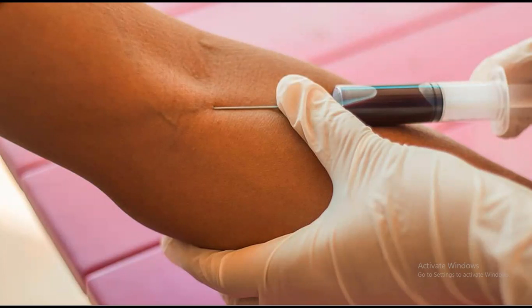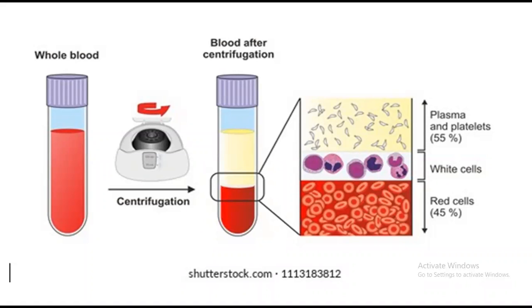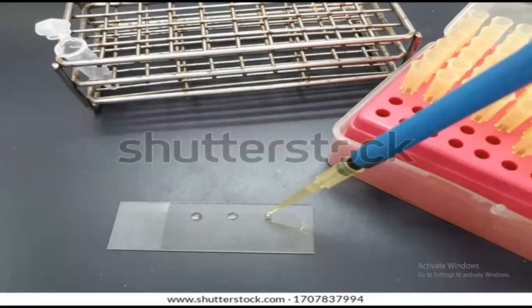For the slide test, you have to take blood from a volunteer — you can take it from yourself, a friend, or ideally from a rabbit. Place the blood in a vial, centrifuge it, and take the plasma. The plasma contains thrombin, fibrinogen, and other components. Centrifugation separates the plasma from the red blood cells. Then take the serum using a syringe or aspirator.